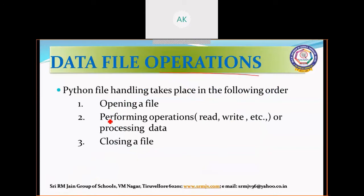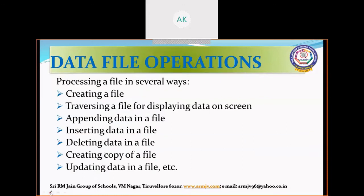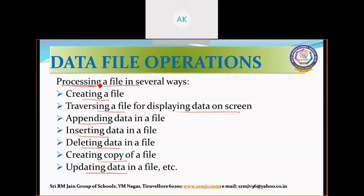We have three main operations on a file. First, you have to open the file. Then you can perform operations like read, write, and many other processing operations in the file. Then you have to close the file. Some of the file processing operations include: creating a file, traversing for displaying data on the screen step by step, appending and adding contents, inserting, deleting contents in the file, creating a new copy of the file, and updating your file.